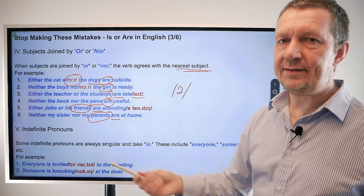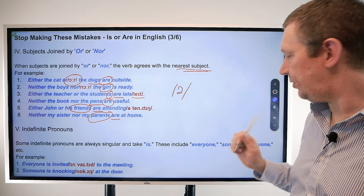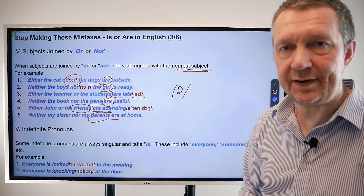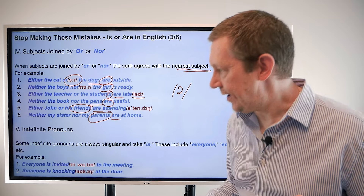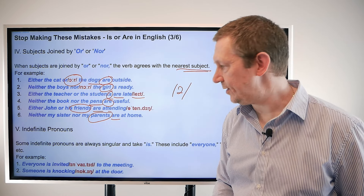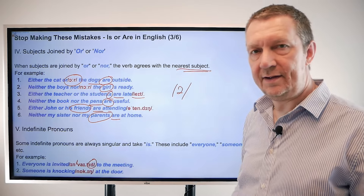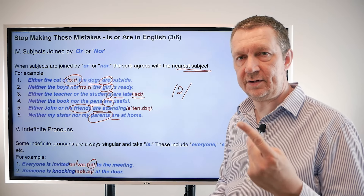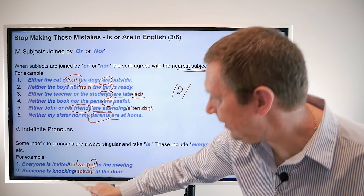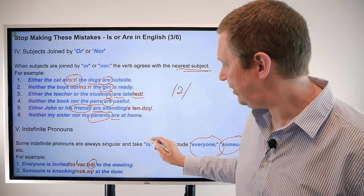Indefinite pronouns — some are always singular and take 'is.' This includes 'everyone,' 'someone,' and 'anyone.' We always say 'everyone is,' 'someone is,' 'anyone is' — we never use 'are' with these words, even though they feel like collective things. For example: 'everyone is invited to the meeting' and 'someone is knocking at the door.' Everyone, someone, and anyone always use 'is.'